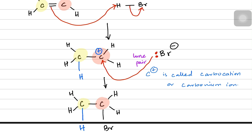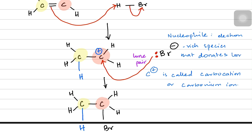Remember, bromide is a nucleophile. A nucleophile is an electron-rich species that donates a lone pair of electrons.